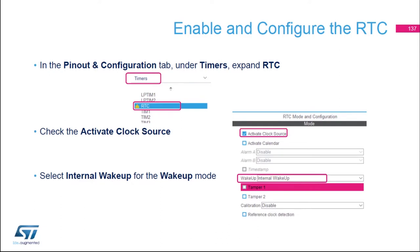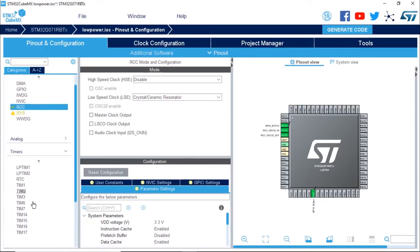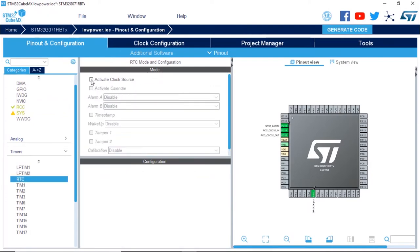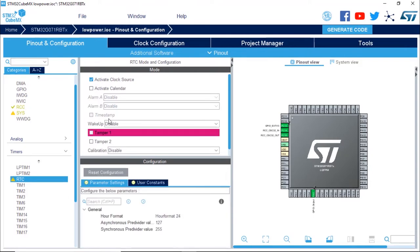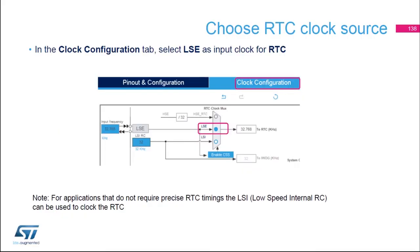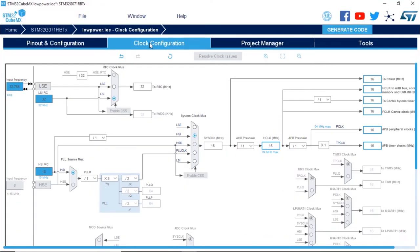The next step is to enable and configure the RTC. In the Pinout and Configuration tab under Timers, we're going to expand RTC, activate the clock source, and select Internal Wake Up for Wake Up mode. Then in the Clock Configuration tab, we're going to select LSE as the input clock for the RTC. I'm going to select RTC under Timers, click Activate Clock Source, select Internal Wake Up, and then in the Clock Configuration tab select LSE to clock the RTC.